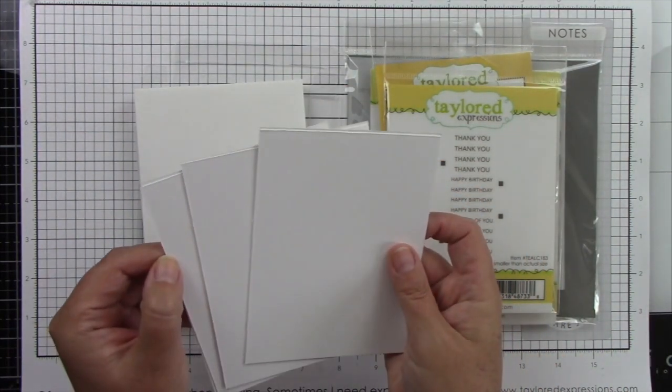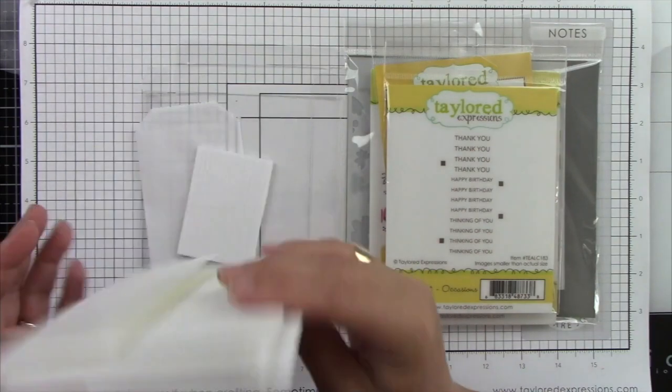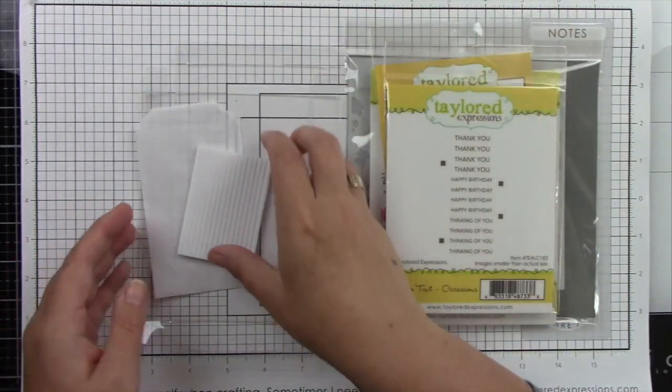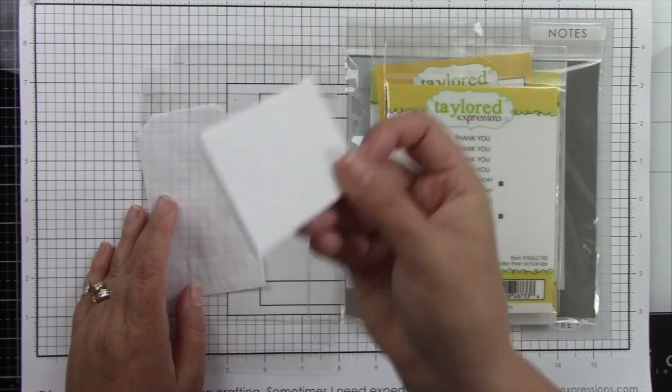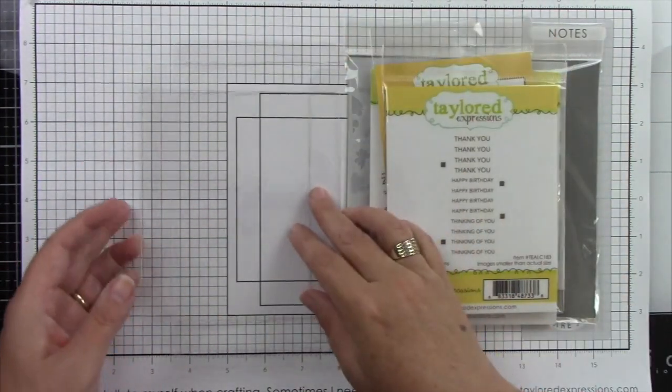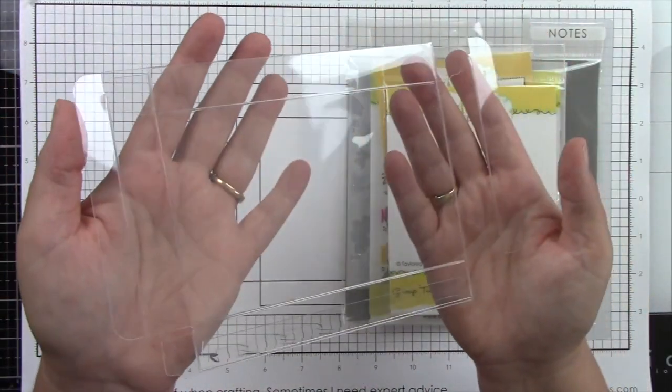Then there are six sugar cube card panels, six coordinating A2 size envelopes, some sticky strips for the sentiments, and the glassine bag that's going to hold your sentiments.